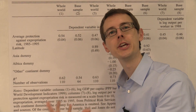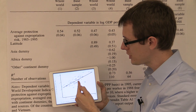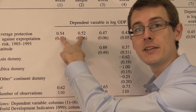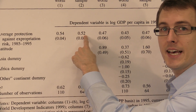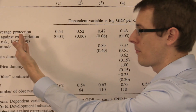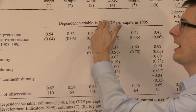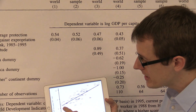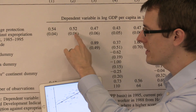What's the relationship between them? In the picture, we see a positive relationship. And in the table, we see positive numbers: 0.52. That says that in the data, property rights tend to be positively related to economic development. This number is just the slope of this line in the picture — that's all this number is.